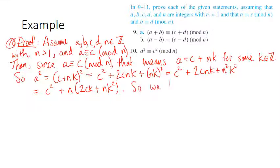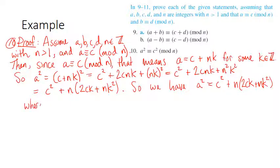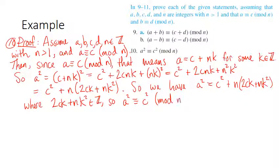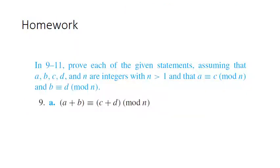We have that a squared equals c squared plus this thing, which is a multiple of n. So this is telling us that a squared is congruent to c squared mod n. If you're able to write two numbers where one equals the other plus a multiple of n, then those two numbers are congruent modulo n. Here's problem 9 part a — go ahead and give it a try using the same method, then check the answer in the back of the book.